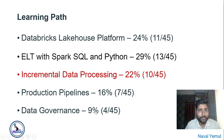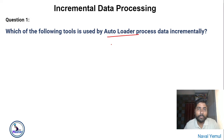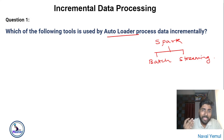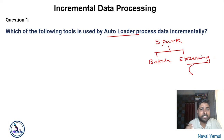Incremental data processing, question one: which of the following tools is used by Autoloader to process data incrementally? When working with Spark, it can handle both batch data and streaming data using Structured Streaming. However, there are certain limitations — you have to provide a schema yourself, and for very large-scale data, Structured Streaming may not work well. Databricks introduced Autoloader, which sits on top of Structured Streaming and works exactly the same way.